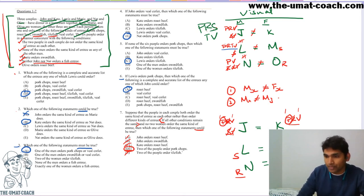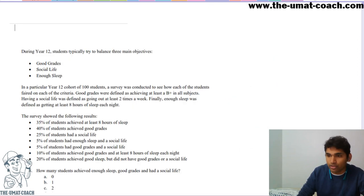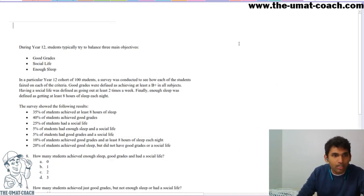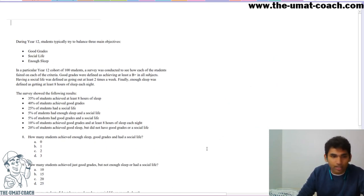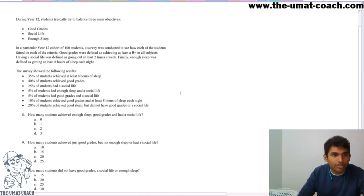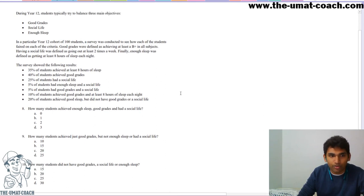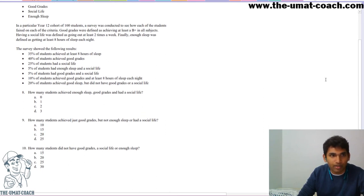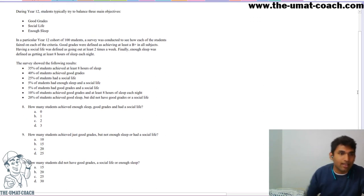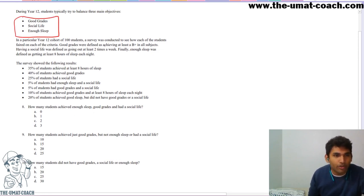Every time you come across questions like this, think about a way to restructure the data into a visual format — and then half your work is done, and you just go through the rules quite quickly. Moving on to the next question: I'm assuming you've had a chance to look at it and attempt it on your own first. This one is a Venn diagram type question.